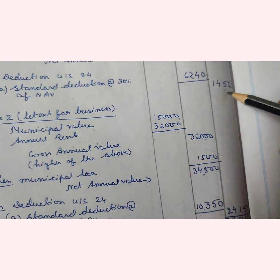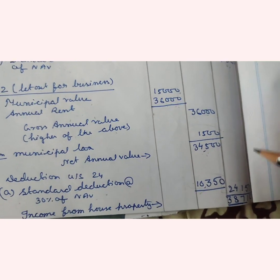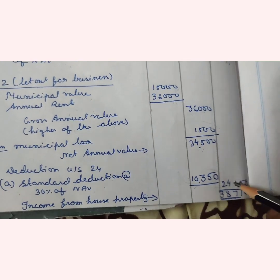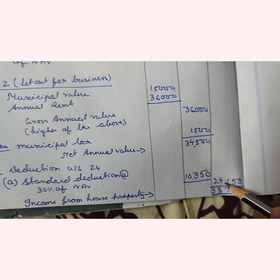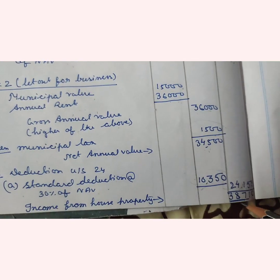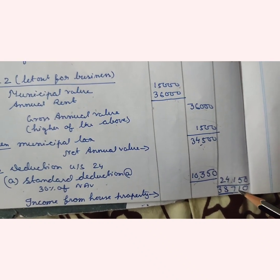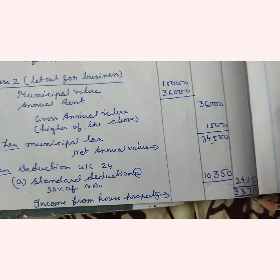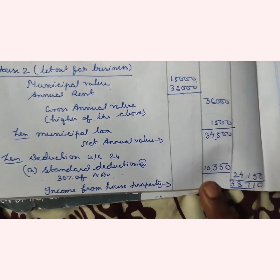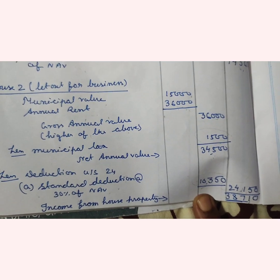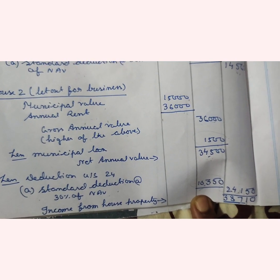Summation of both incomes: income from House 1 is ₹14,560 and income from House 2 is ₹24,150. The total income from house property for Mr. Amal Juwardar from both houses is ₹38,710.